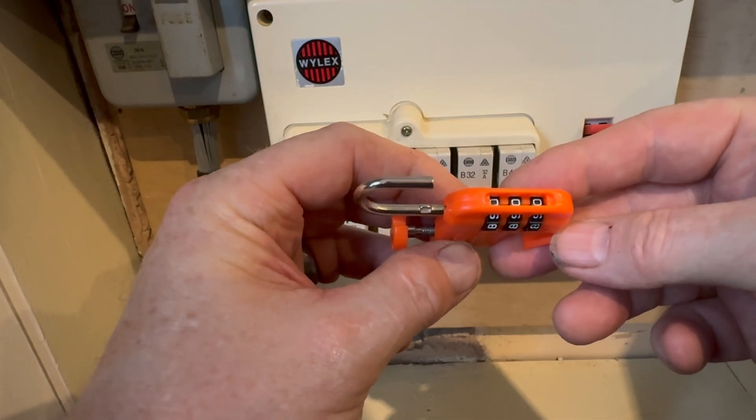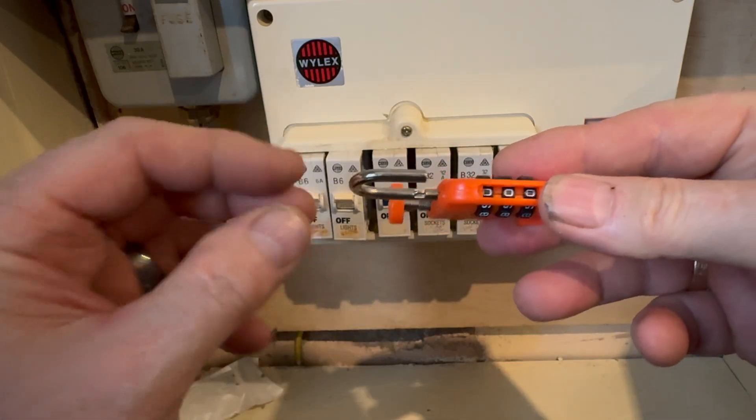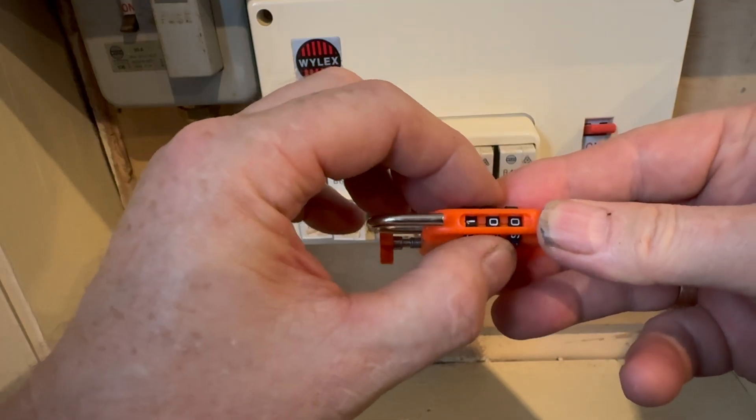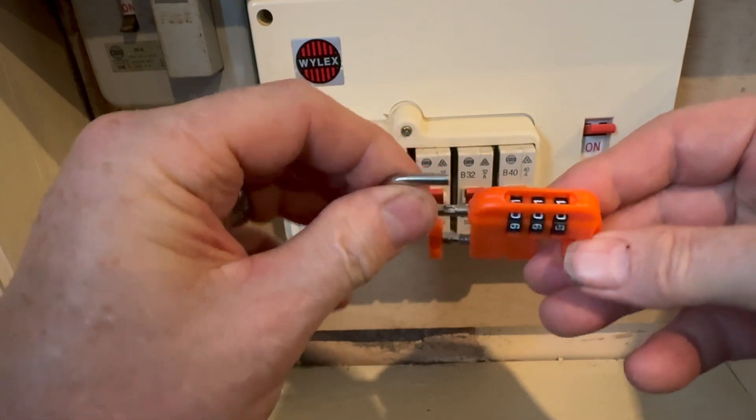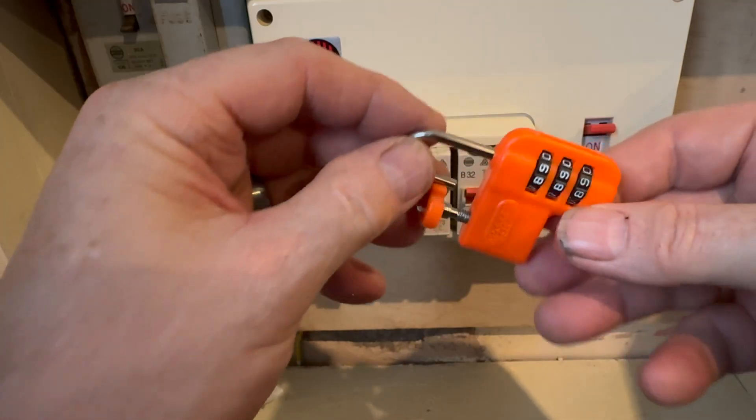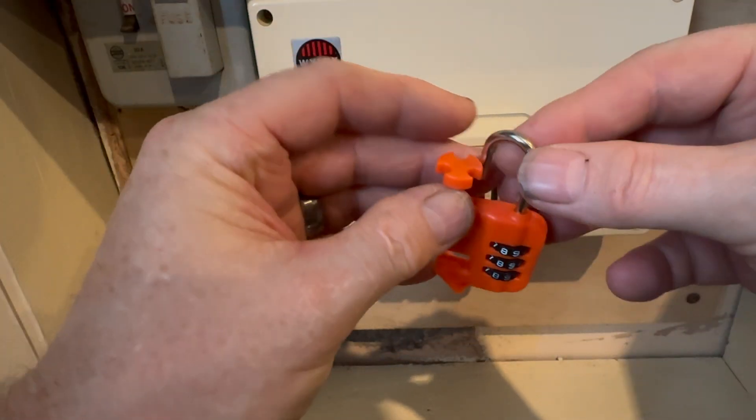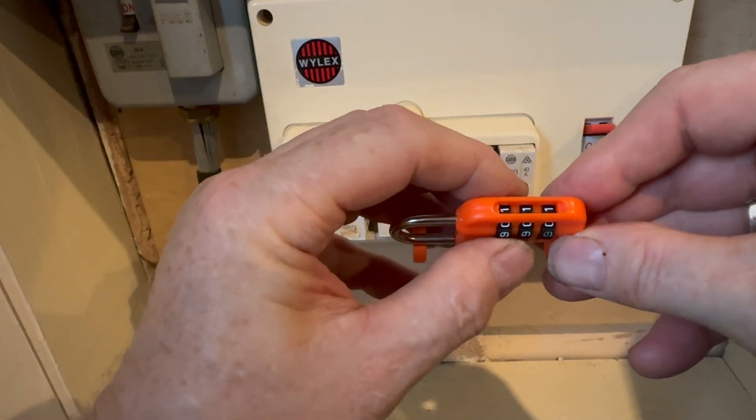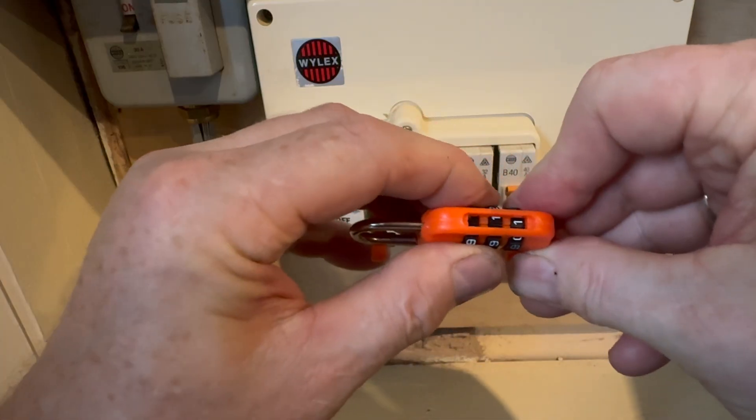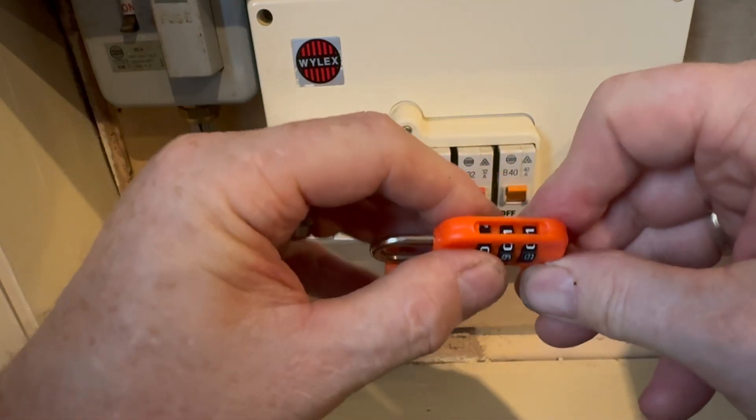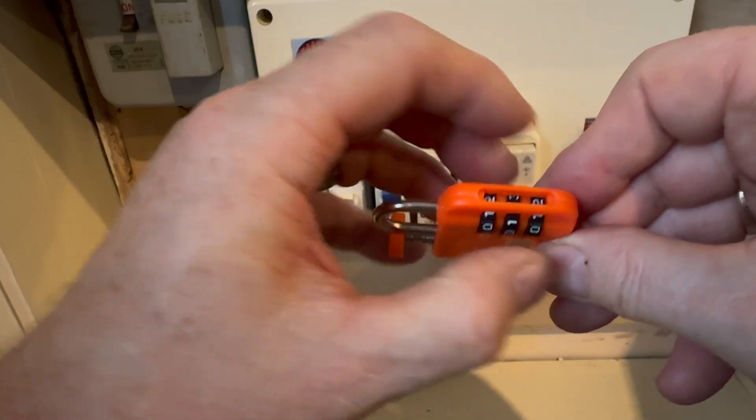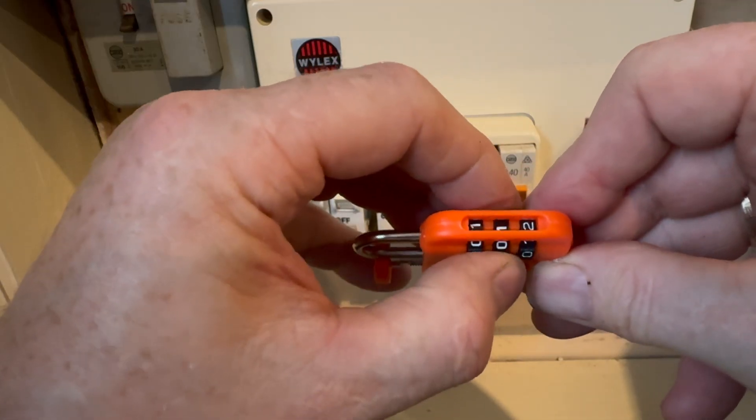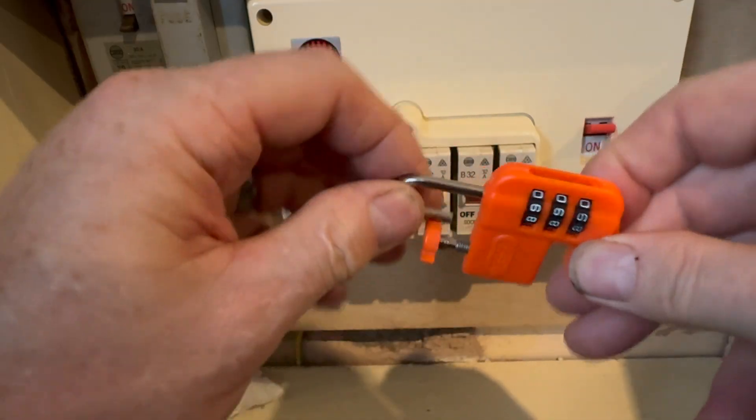This is actually set to zero. If you want to change it you press that down there and then you can move the numbers. So if we move it to one, that's now changed to one. So you line these up, put that in, move the numbers to two. That's now locked. So if we move them back to one, that's now unlocked.